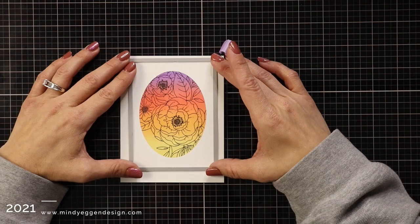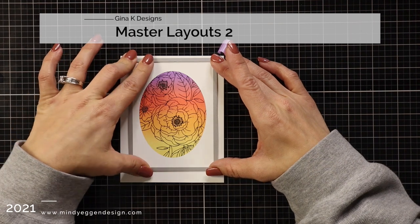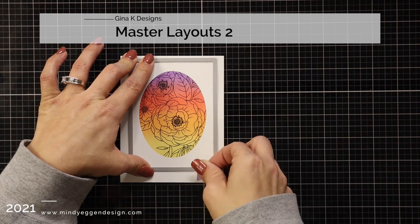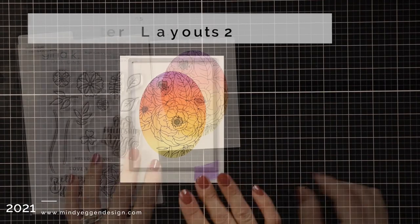Then I'm going to bring in a die from the Master Layout 2 die set and this is going to give me a stitched border around my area.